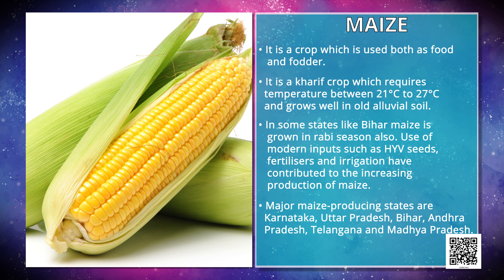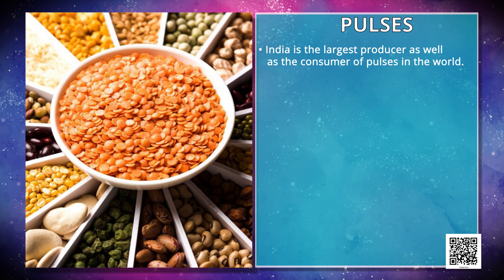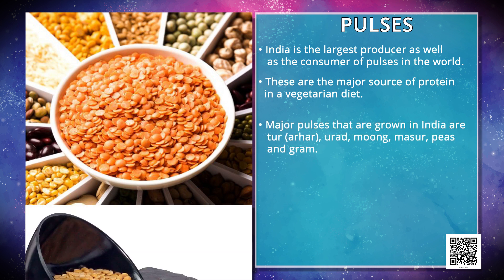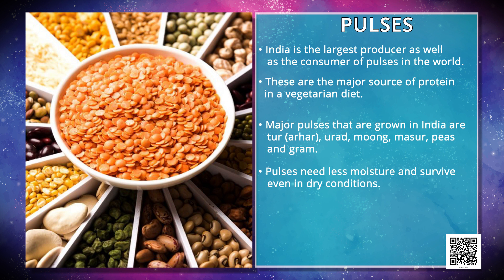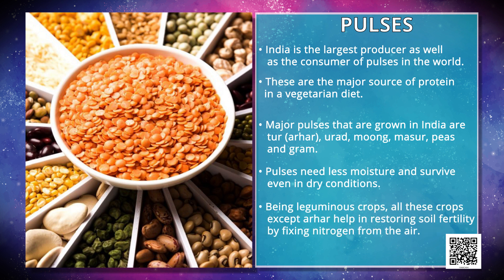Major maize-producing states are Karnataka, Uttar Pradesh, Bihar, Andhra Pradesh, Telangana and Madhya Pradesh. Now we talk about pulses. India is the largest producer as well as the consumer of pulses in the world. These are major sources of protein in a vegetarian diet. Major pulses grown in India are Toor, Urad, Moong, Masoor, Peas and Gram. Pulses need less moisture and survive even in dry conditions. Being leguminous crops, all these crops except Arhar help in restoring soil fertility by fixing nitrogen from the air. Therefore, these are mostly grown in rotation with other crops.